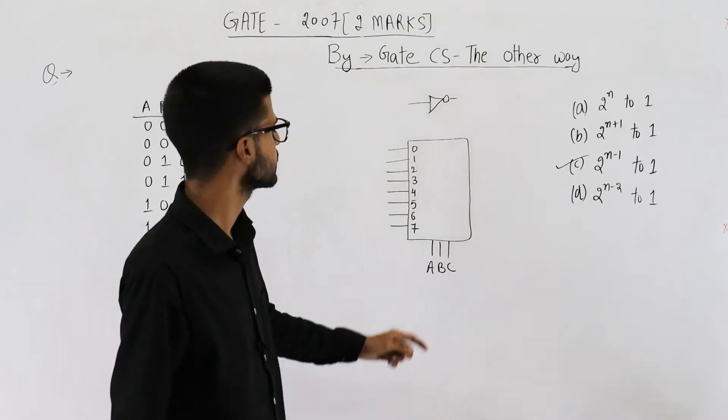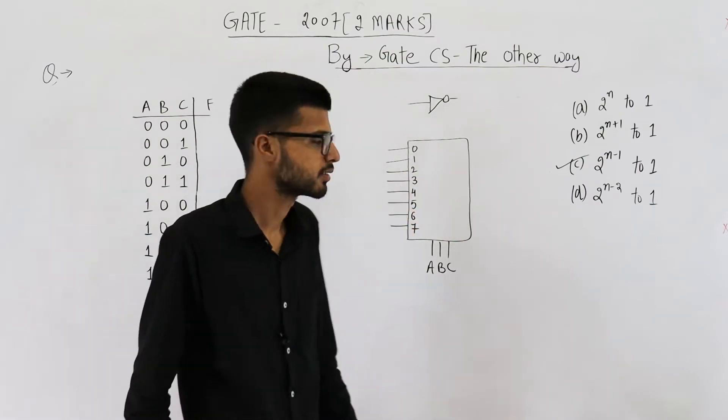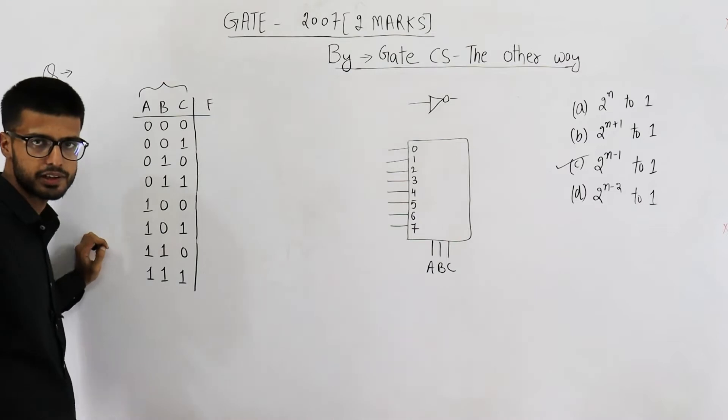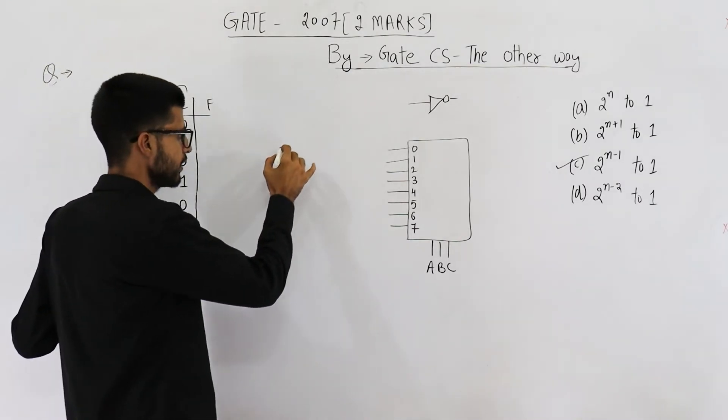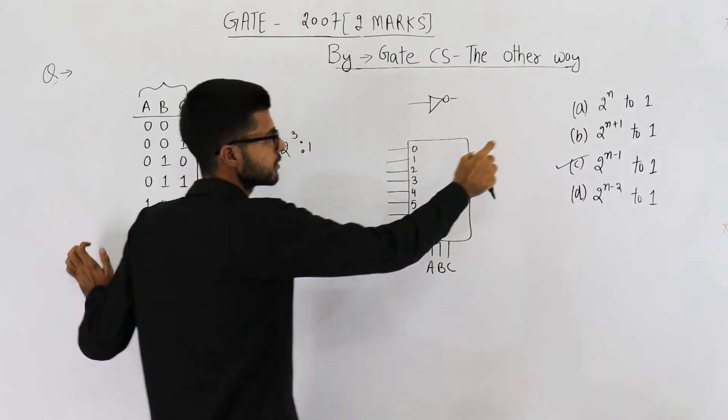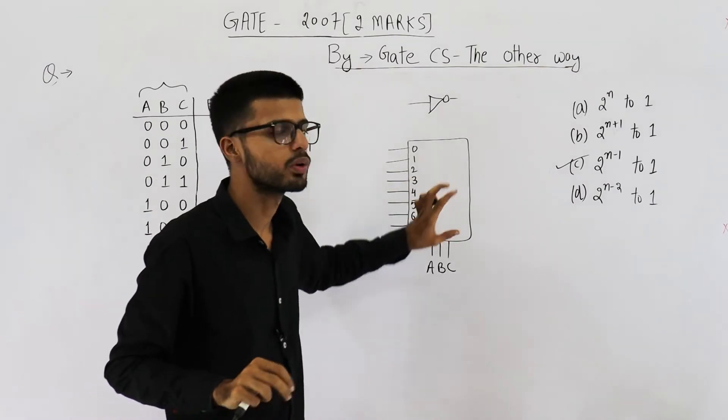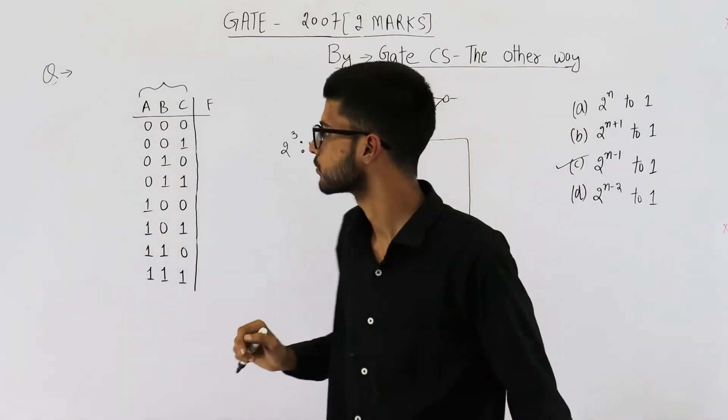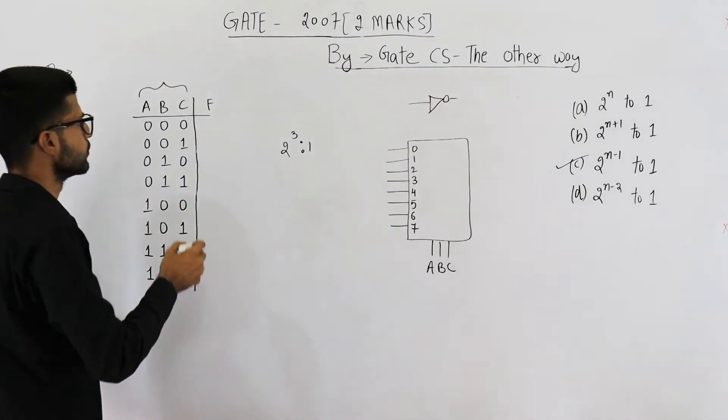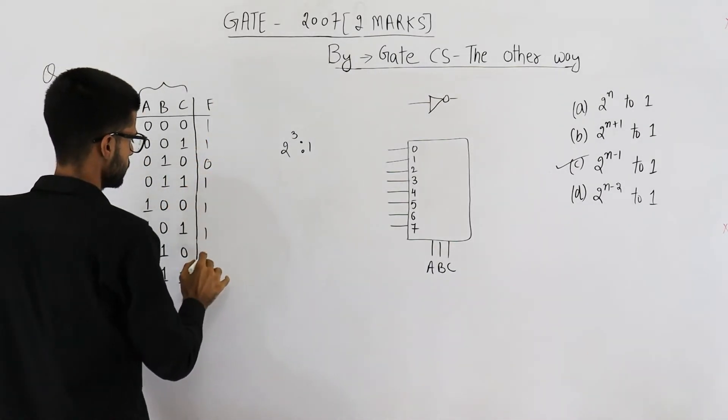First of all, let's implement any boolean function using the multiplexer of same size. That means let us assume the function is dependent on three variables and first we will implement it using two power three mux. That means this only. In this case, no additional hardware will be required. That means only mux is sufficient. So you can take any function.